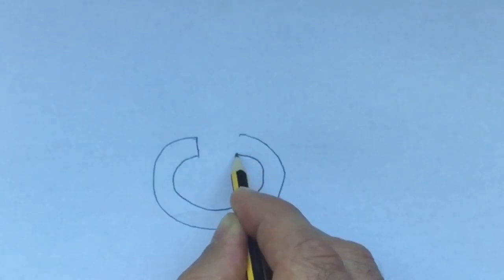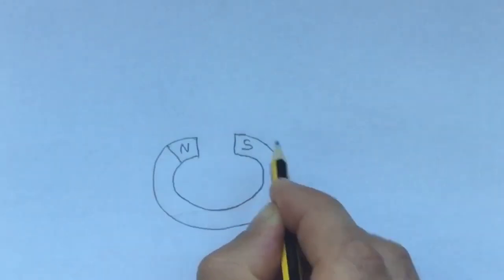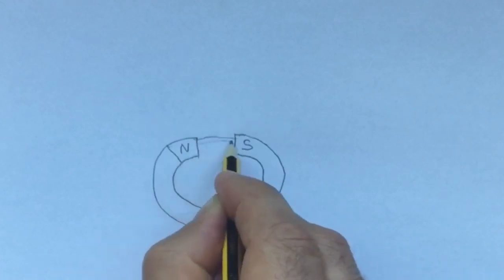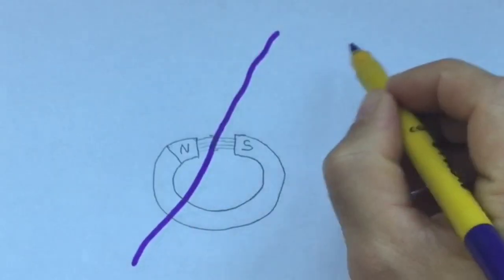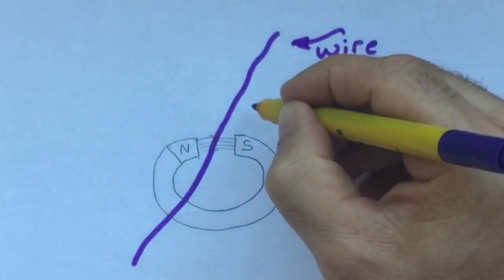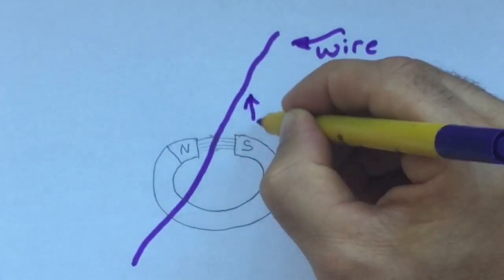So how do we generate electricity? Magnets have a north and south pole, and a magnetic field goes between them. It was discovered a long time ago that if you put a wire in the middle of this magnetic field and either move the wire or you move the magnet, this would cause electricity to flow if there was a complete circuit.